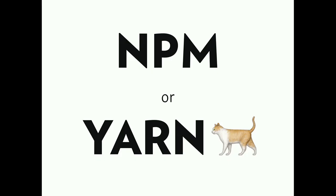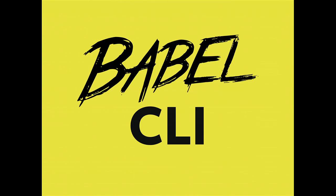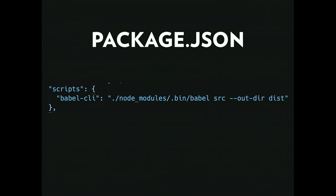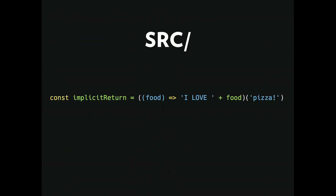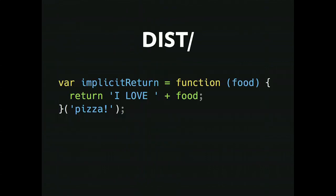To get started with Babel, you need npm or yarn. I prefer yarn, but in the demo repo I use npm. You'll need some type of task runner like gulp, grunt, or webpack — or if you don't want a task runner, there's a Babel CLI. In my package.json I have a script: when I run Babel CLI, look in the NodeModules Babel directory, look in the source folder, and put output in the dist folder. I have an example of an implicit return using the arrow function. I run 'npm run babel-cli' and it's done — ES5 code written from ES6. Arrow function converted, explicit return added. Awesome.